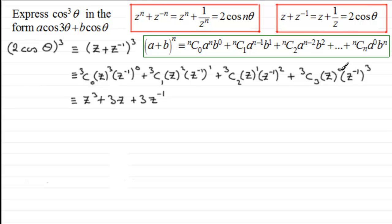And for the last term, ³C₃ is 1, z⁰ is 1, and (z⁻¹)³ is z⁻³. So we've got plus z⁻³. And when you get to this stage, what we do is we now think about using this identity here, trying to pair up terms of the form zⁿ + z⁻ⁿ.